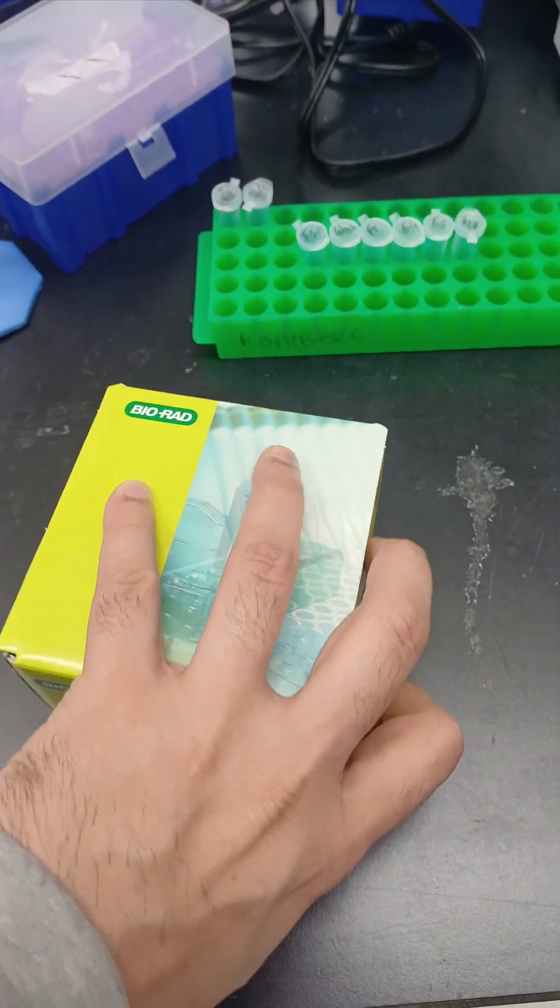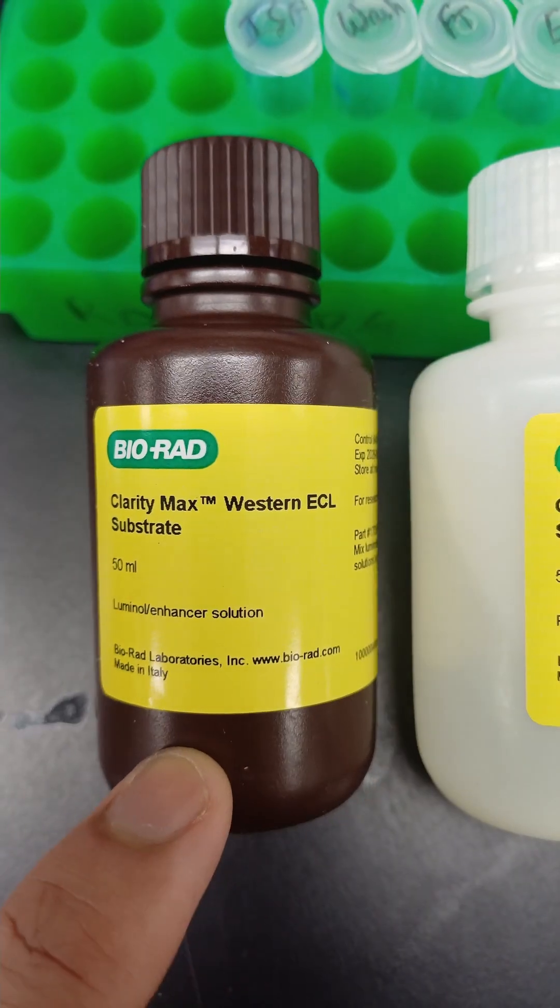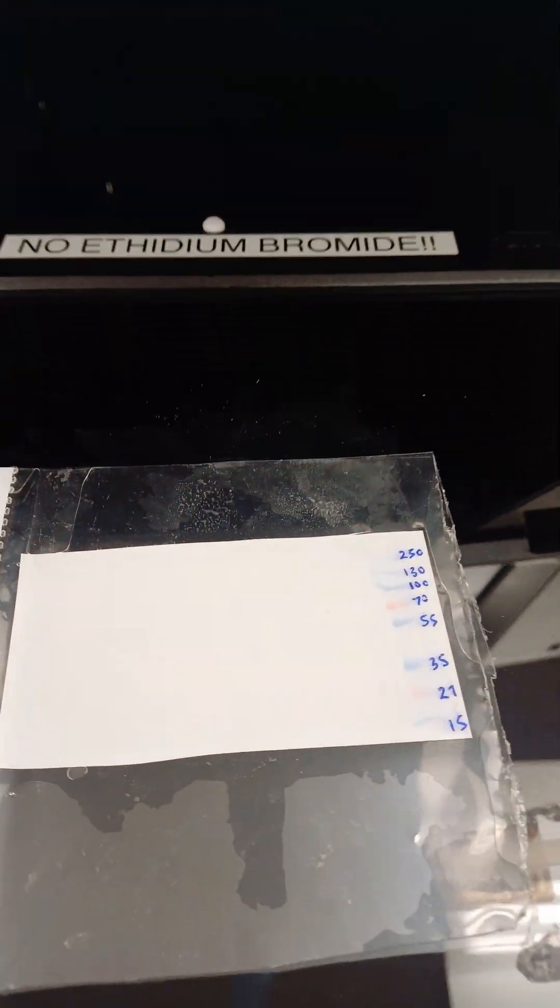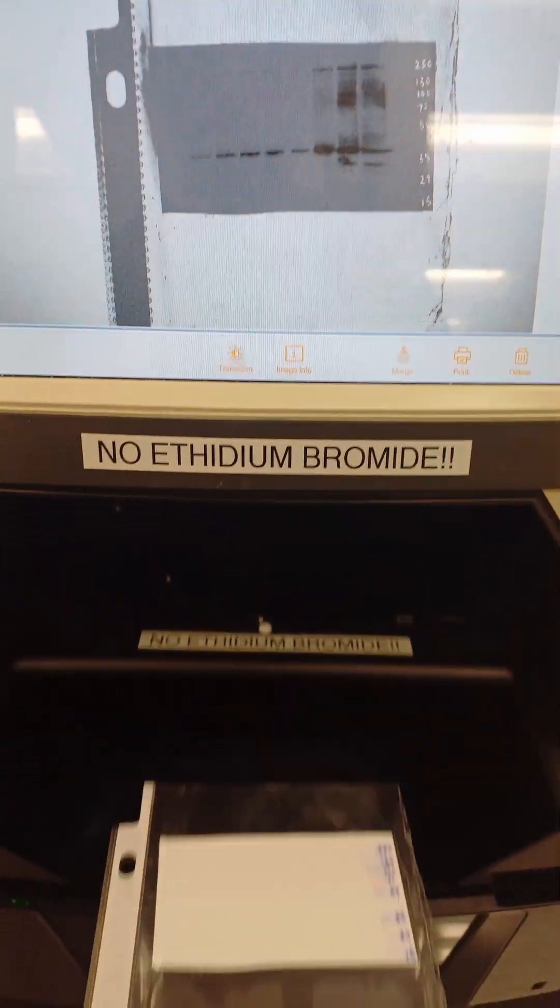Now to develop the blot, add the chemiluminescent reagent. Mix equal parts of these and pour over the blot under a chemidoc. Finally expose and capture the signal. And that's your western blot done right.